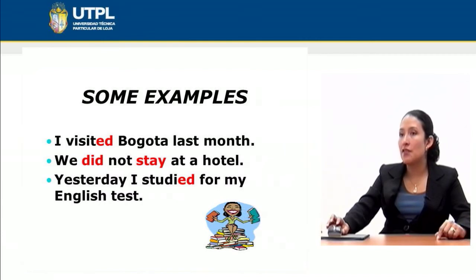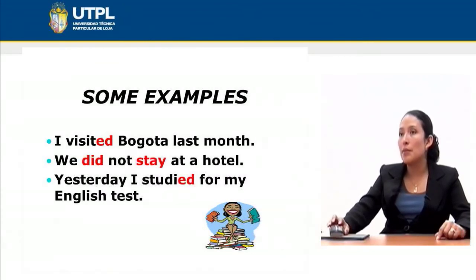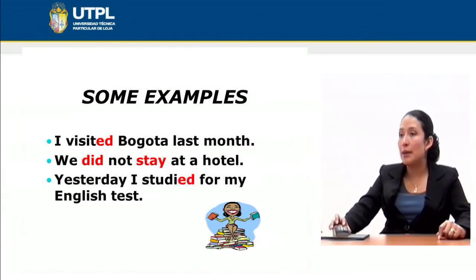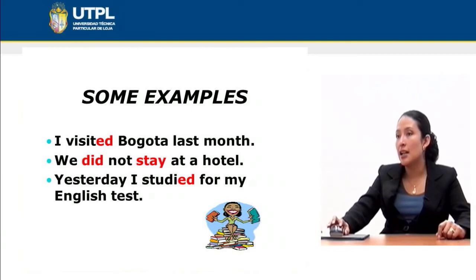For example: I visited Bogotá last month. Notice that here we use an -ed ending because 'visit' is a regular verb. You need to classify verbs as regular or irregular — not necessarily by memorization, but you need a clear understanding of their uses in order to use -ed endings correctly or not. We did not stay at a hotel — notice that in the negative you use 'did not' plus the base form of the verb, in this case 'stay'. And: Yesterday I studied for my English test. 'Study' is a regular verb, that's why we use an -ed ending.